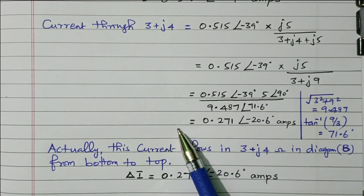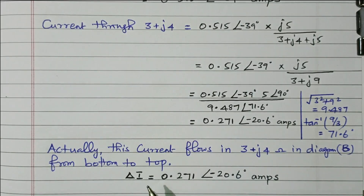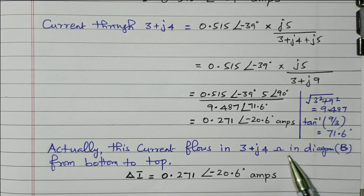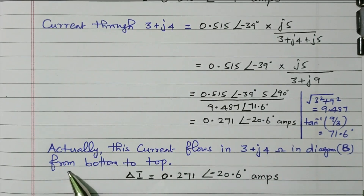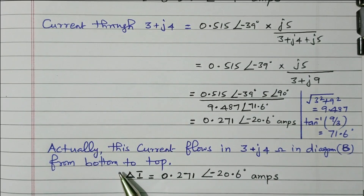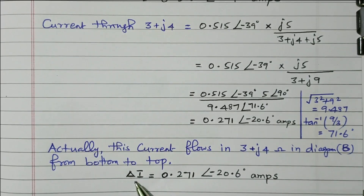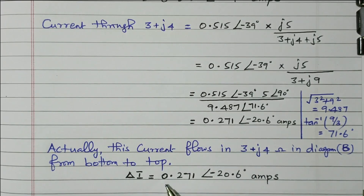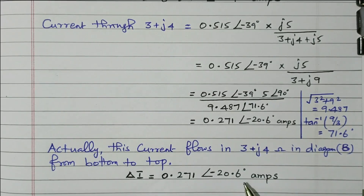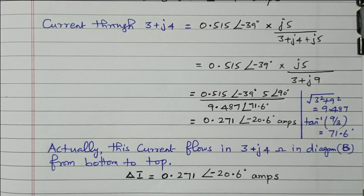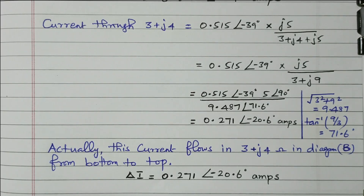We have now calculated the current through the 3 plus J4 ohm resistor. This current flows in the 3 plus J4 ohm resistor in diagram B from bottom to top, opposing the original direction. So the change in current, delta I, is 0.271 with an angle of minus 20.6 degrees ampere. In this problem, we changed the resistor; due to that, the compensation voltage was calculated, and thereby the current flowing through the branch was determined. That is nothing but the change in current.